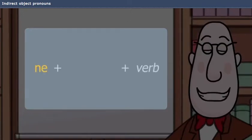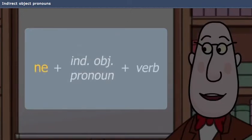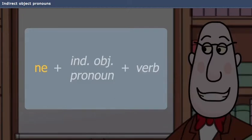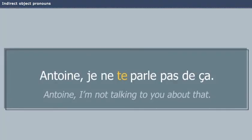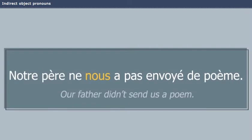To use an indirect object pronoun in a negative statement, just place it between ne and the verb. Antoine, je ne te parle pas de ça. Notre père ne nous a pas envoyé de poème.